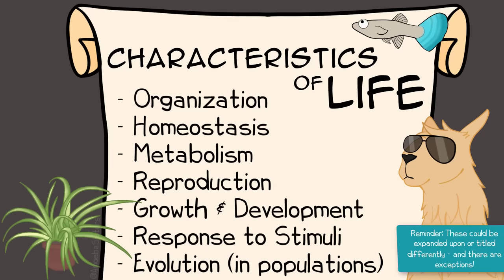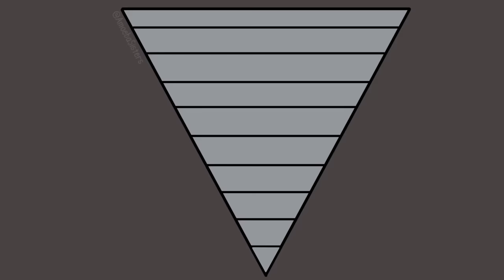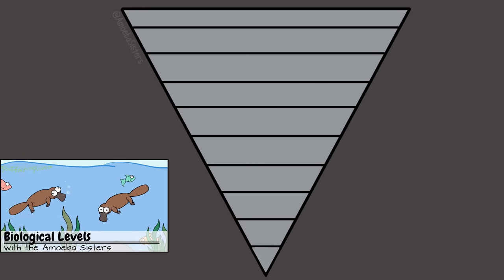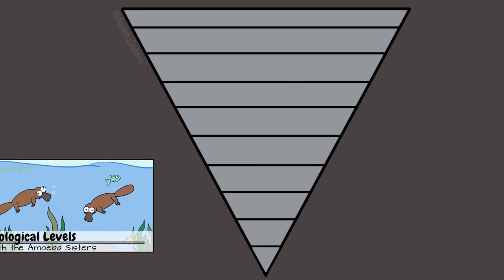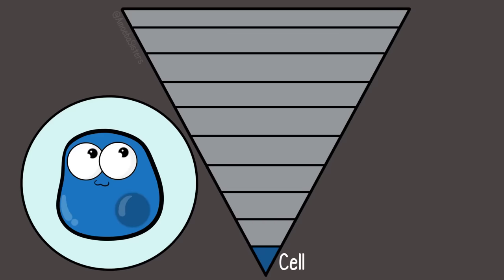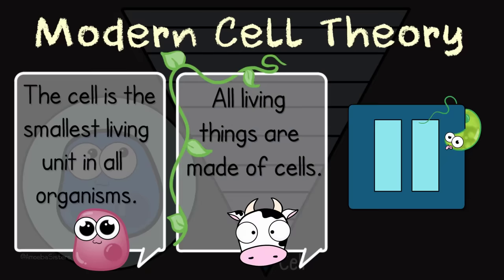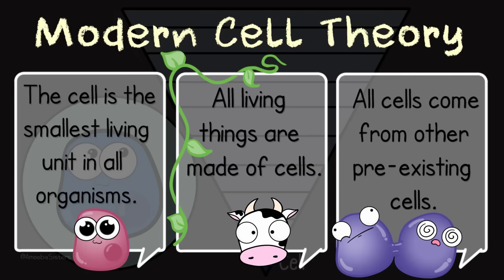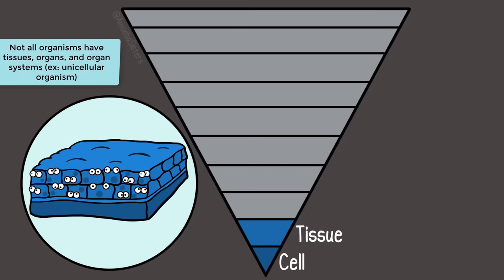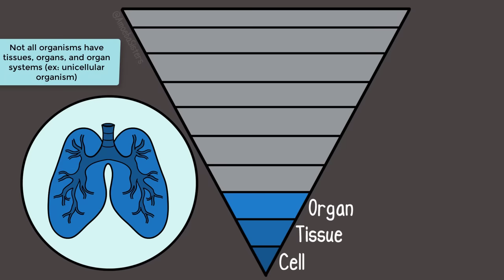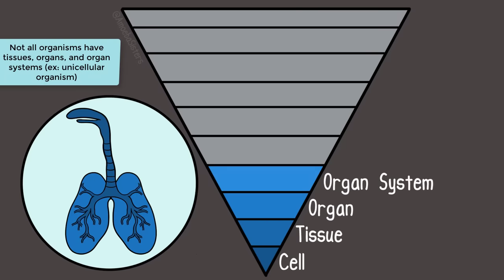This may get you thinking about what's alive and what's not. When studying biology—the study of life—it's important to understand the biological levels of organization. These levels start small, the smallest living unit being the cell. That's part of the cell theory after all. The cell theory includes that the cell is the smallest living unit in all organisms, that all living organisms are made up of cells, and that all cells come from pre-existing cells. Cells combined together make up tissues. Tissues make up organs. Organs make up organ systems.